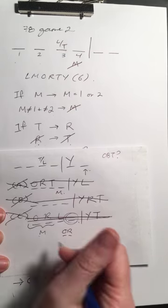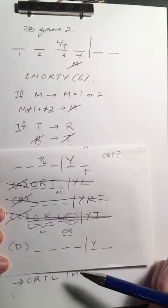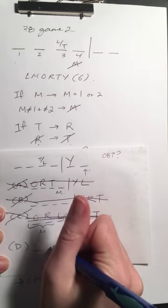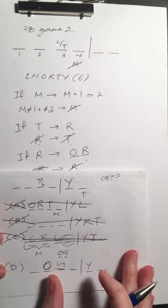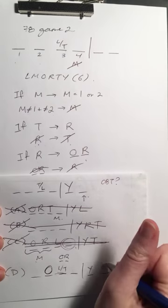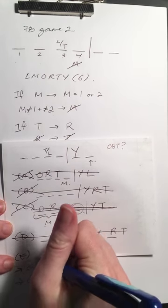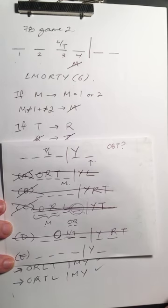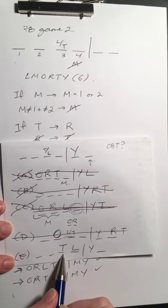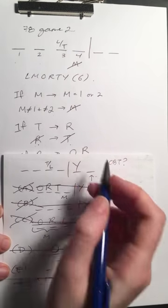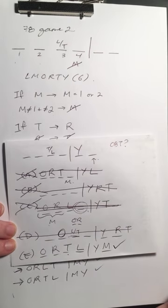Answer choice D: Y is out. Could O be assigned to 1922? If O is there, L or T takes the next spot, so we can't have O-R together, meaning R must be out. If R is out, T is also out — that doesn't work. So it's got to be E: L assigned to 1924. That means T is assigned to 1923. If T is in, R is also in. If R is in, O is right before R — M would be out — and that works.